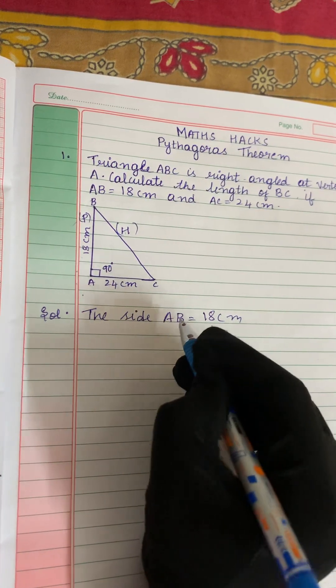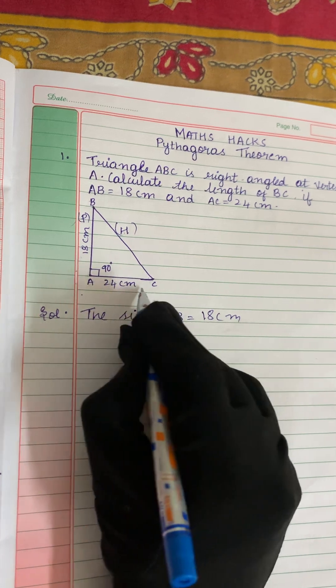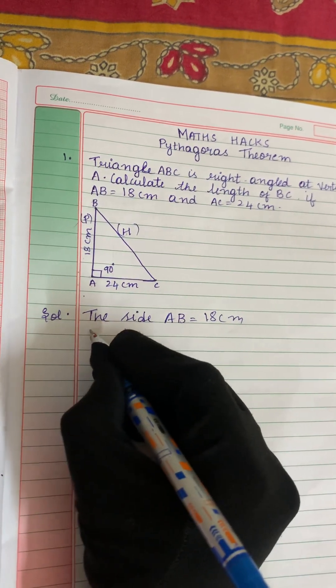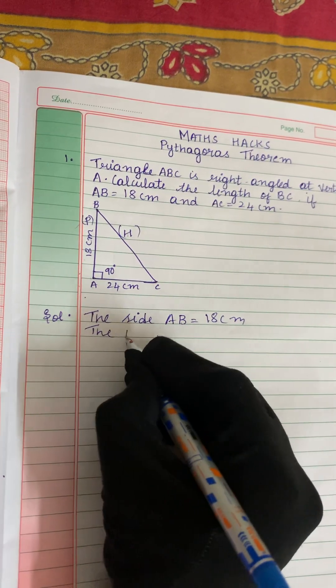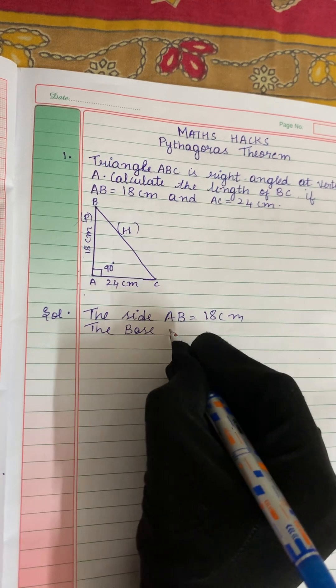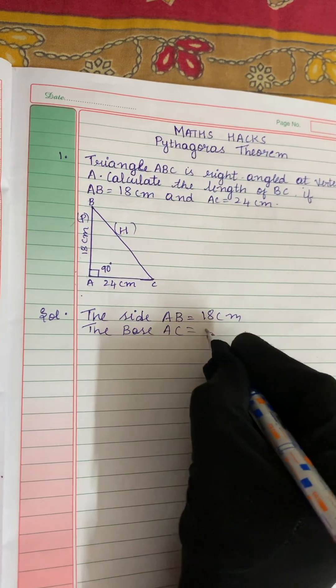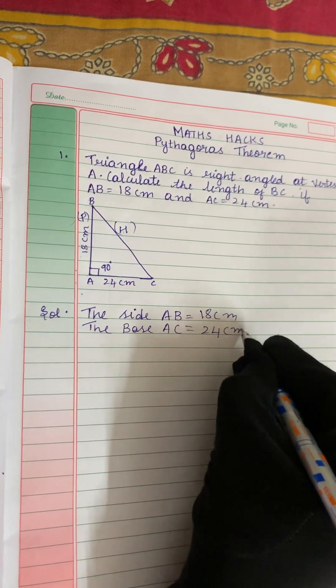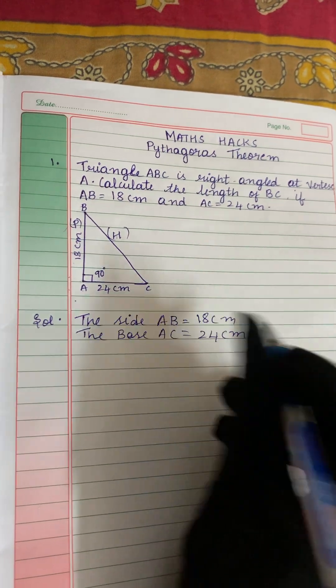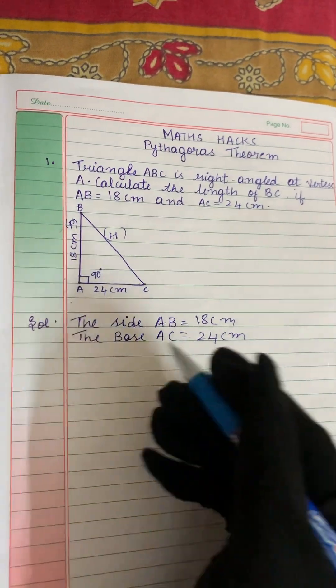So this is perpendicular. This is base. AC is a base. So the base AC is equal to 24 cm. This much is given in the question. We have to find out the value of BC.